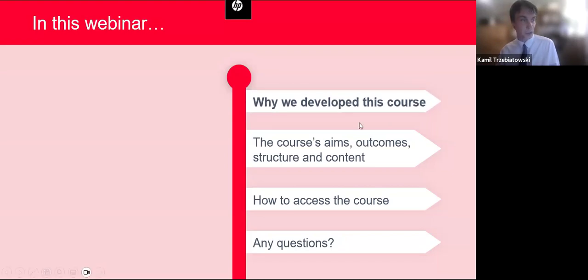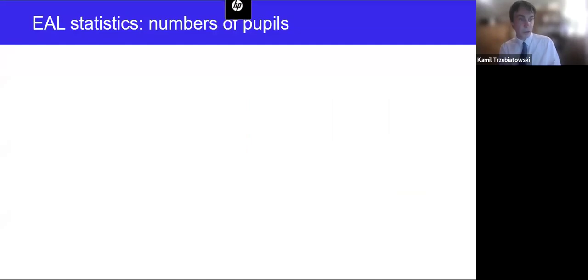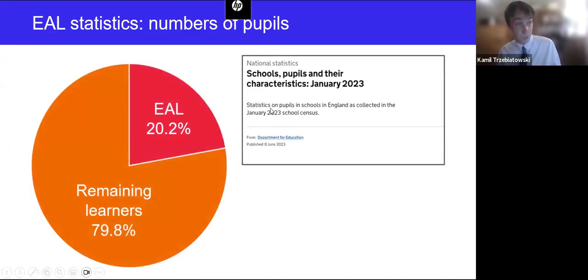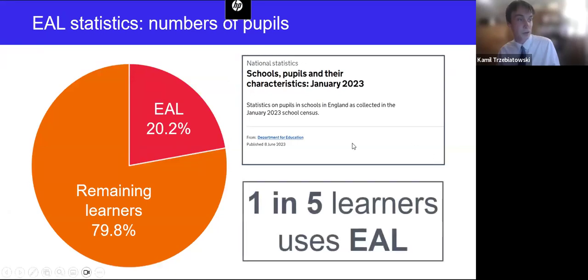We're starting with the first section: why we developed this course. In considering the importance of EAL assessment, it's important to put it in context first. According to the last school census from January 2023, there were 20.2% of learners deemed to have English as an additional language — those who, in the government's definition, have been exposed to a language at home that is known or believed to be other than English. That means one in five learners in our schools uses English as an additional language, making this group large enough to warrant significant attention.